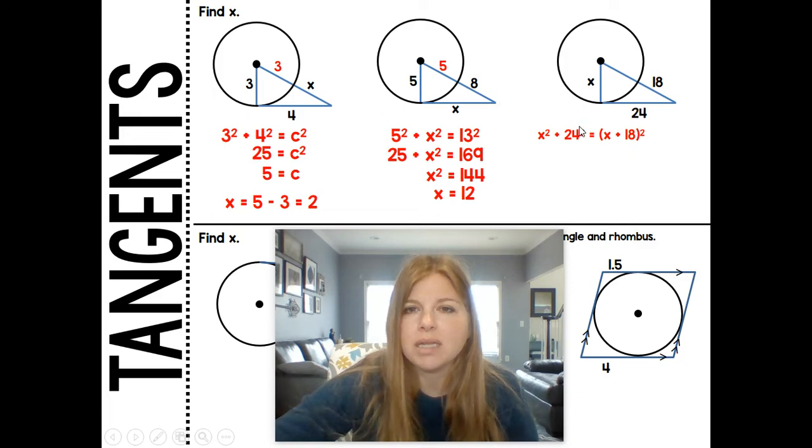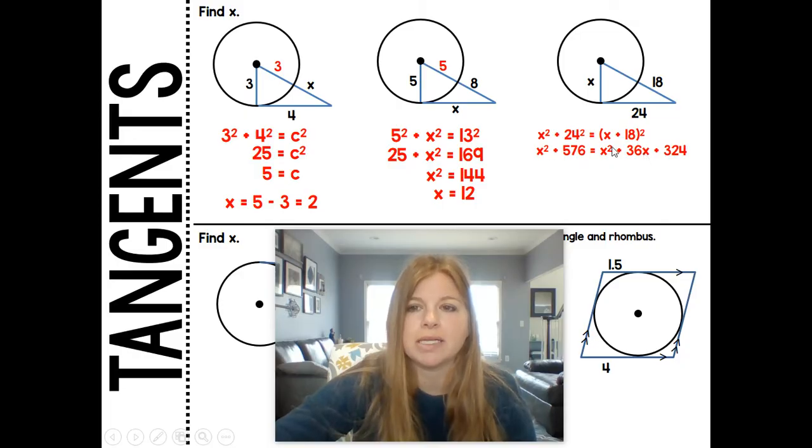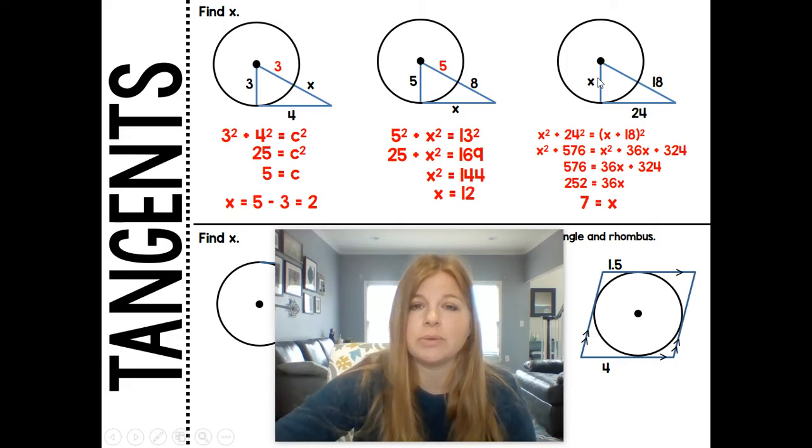Let's start to simplify it out. So 24 squared is 576. We would need to do X plus 18 times X plus 18, which ends up becoming X squared plus 36X plus 324. We want to solve for X. Notice you've got X squared on both sides, so we can subtract that out. Then we would subtract 324, and then divide both sides by 36, and we would get X equals 7. Now, it checks out. 7 squared plus 24 squared is equal to 7 plus 18, which is 25, 25 squared. 7, 24, 25 is actually one of our Pythagorean triples.